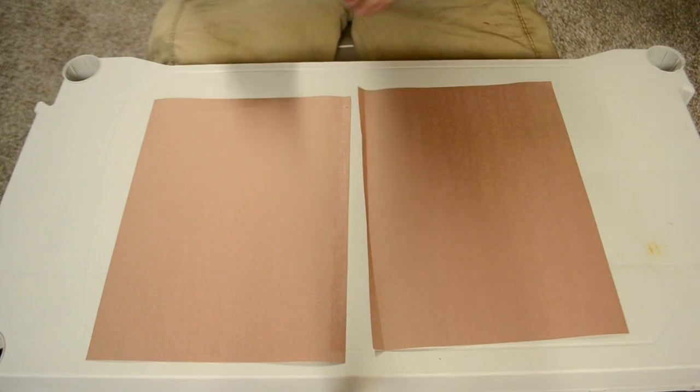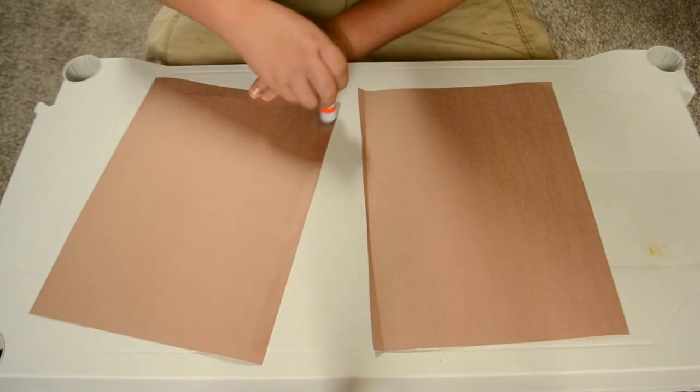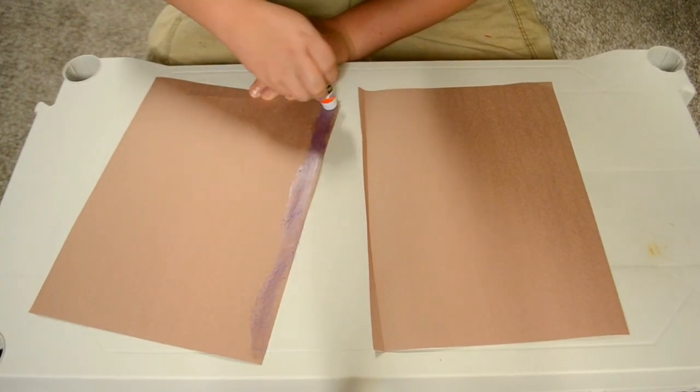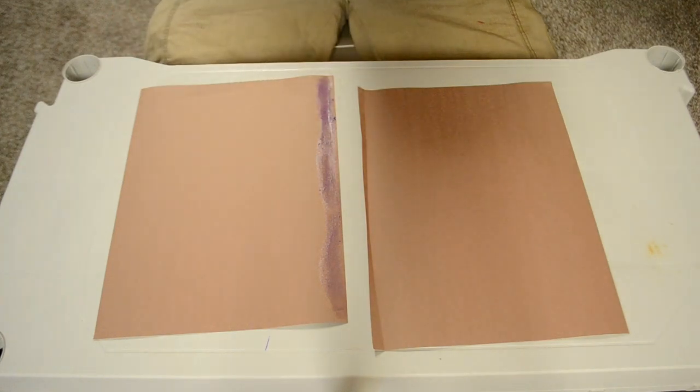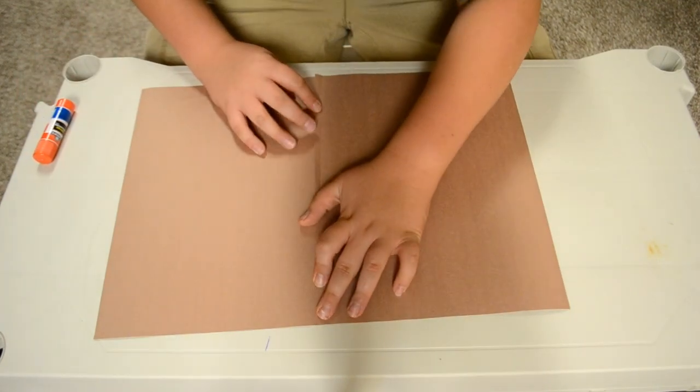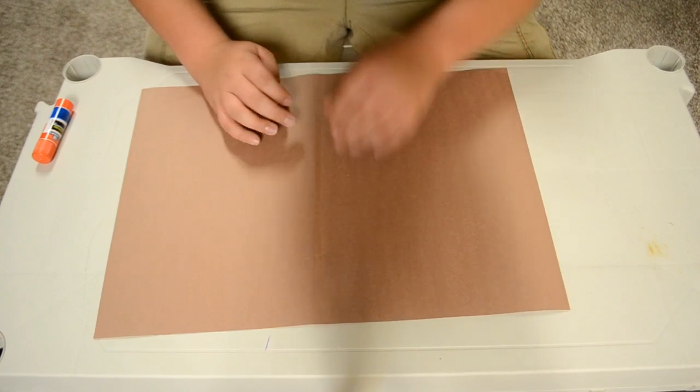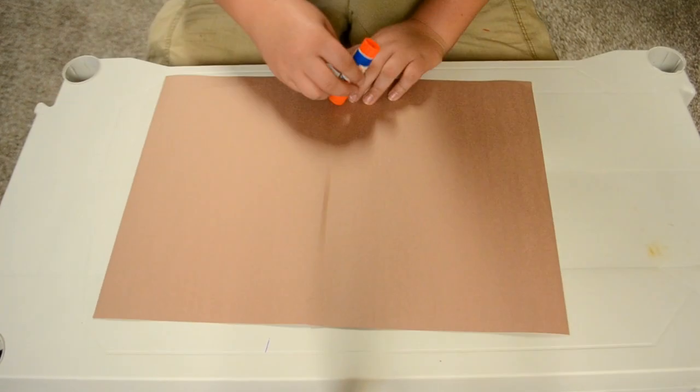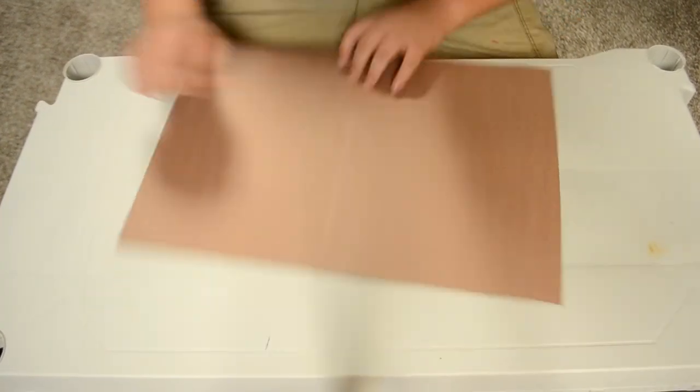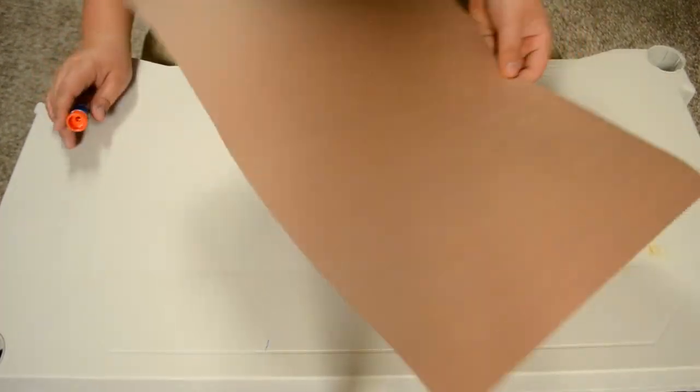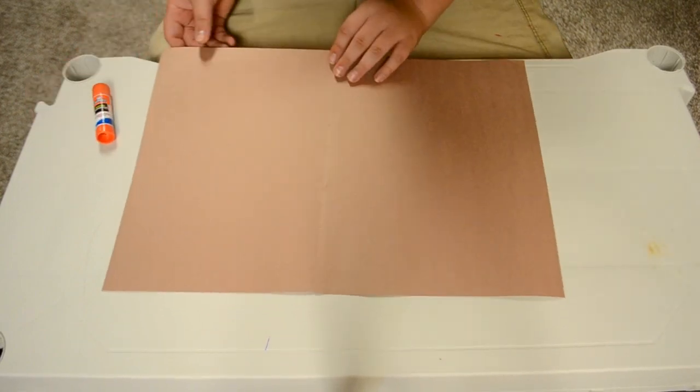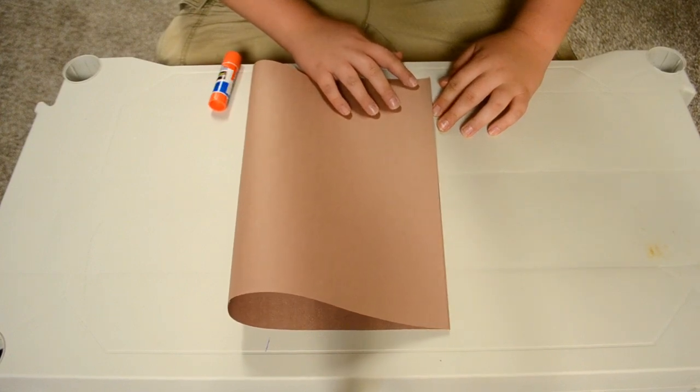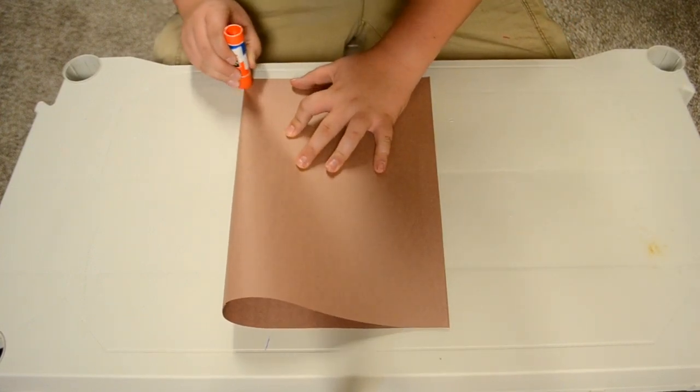What you want to do is get your glue stick, really make sure you have it because this is the key. Put it all on the side with your glue stick and make sure you put this on evenly. Then glue your other piece of paper to it.